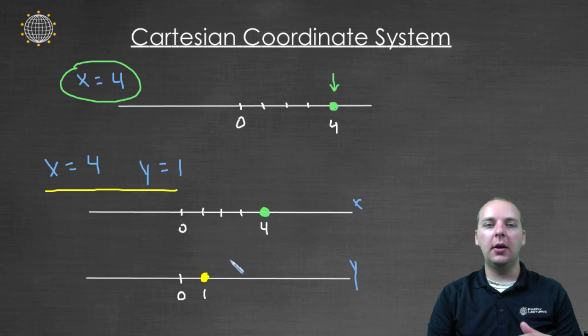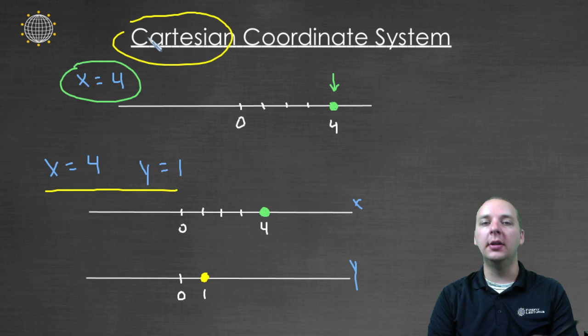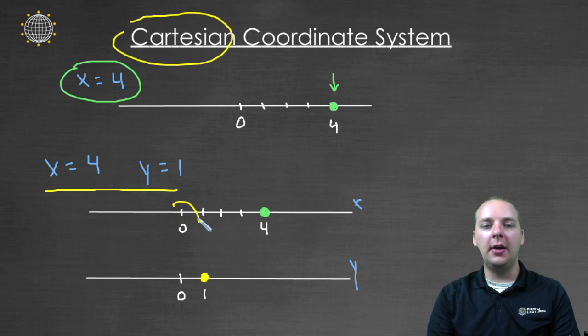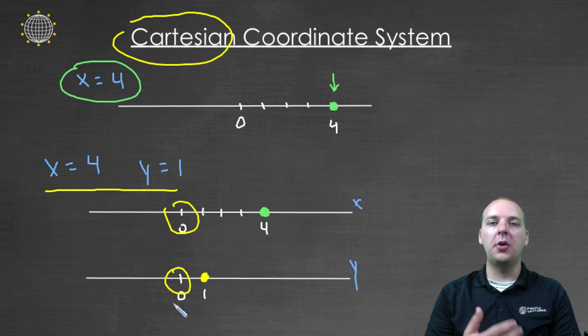So there was somebody who thought up a great idea for how to get these guys together. His name was Rene Descartes. And that's where the word Cartesian coordinate system comes from. And what his idea was, was to take the y number line and turn it vertical and make them line up at the zeros, and then we would get what's called a plane. And this is extremely helpful for plotting points that have both an x and a y that you're trying to plot simultaneously.